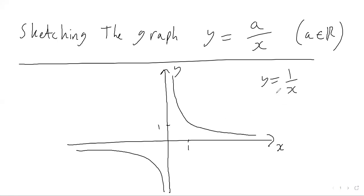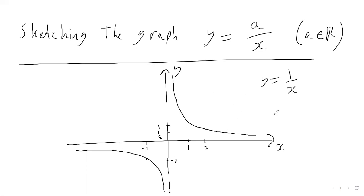If you substitute x equals 2 you get 1 divided by 2, which gives you a half — so that point is at one half on the graph. You can do the same with the negative part: substituting x equals minus 1 you get minus 1, because 1 divided by minus 1 is minus 1, and so on. That gives you the shape for this kind of graph.